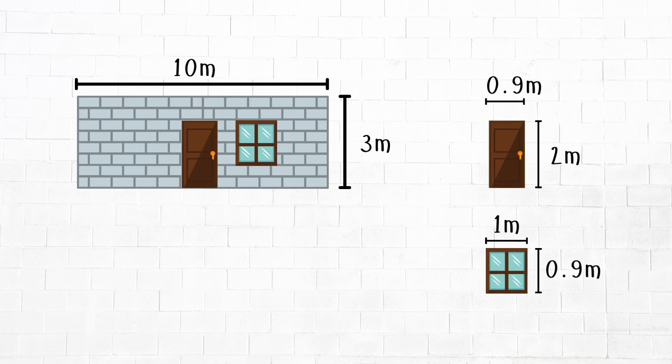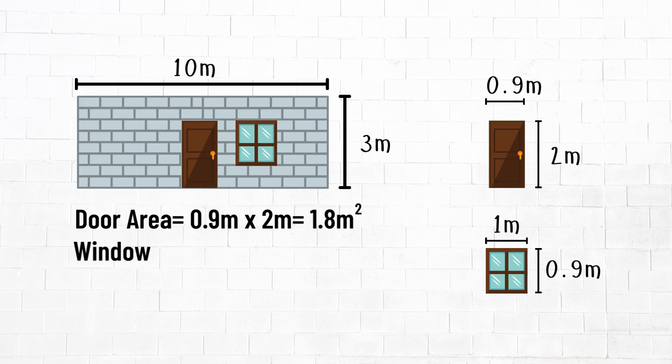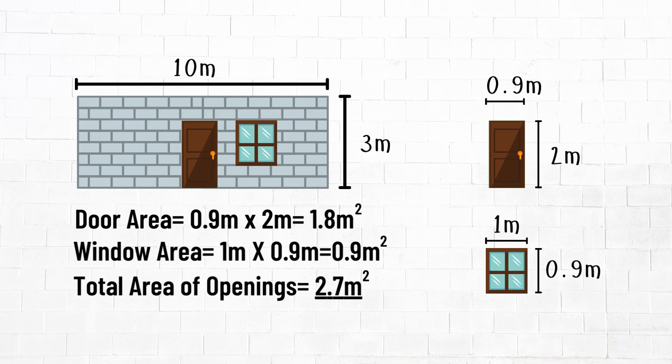So our door area equals 0.9 by 2 meters, which equals 1.8 square meters. Our window area is 1 meter by 0.9 meters, which is equal to 0.9 square meters. The total area to subtract is 1.8 plus 0.9, which is equal to 2.7 square meters.